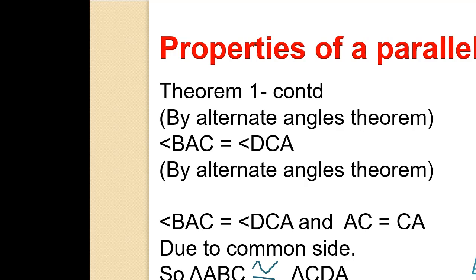Therefore Triangle ABC is congruent to Triangle CDA, with AB equal to DC and BC equal to AD. By ASA congruence of triangles, Triangle ABC is congruent to Triangle CDA.